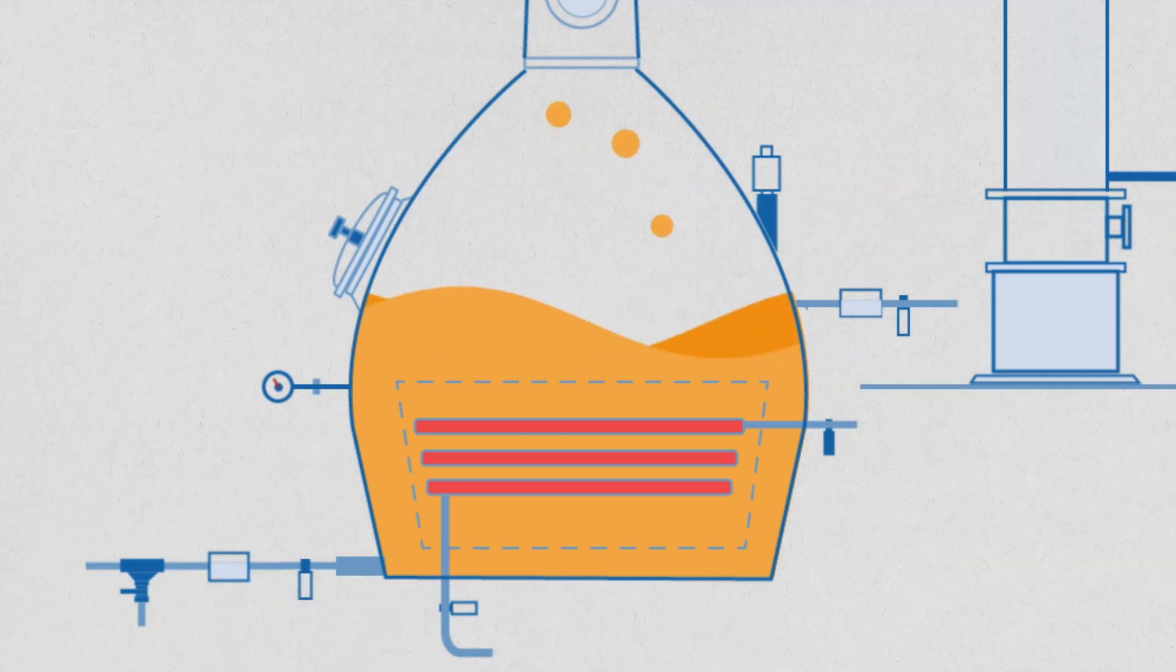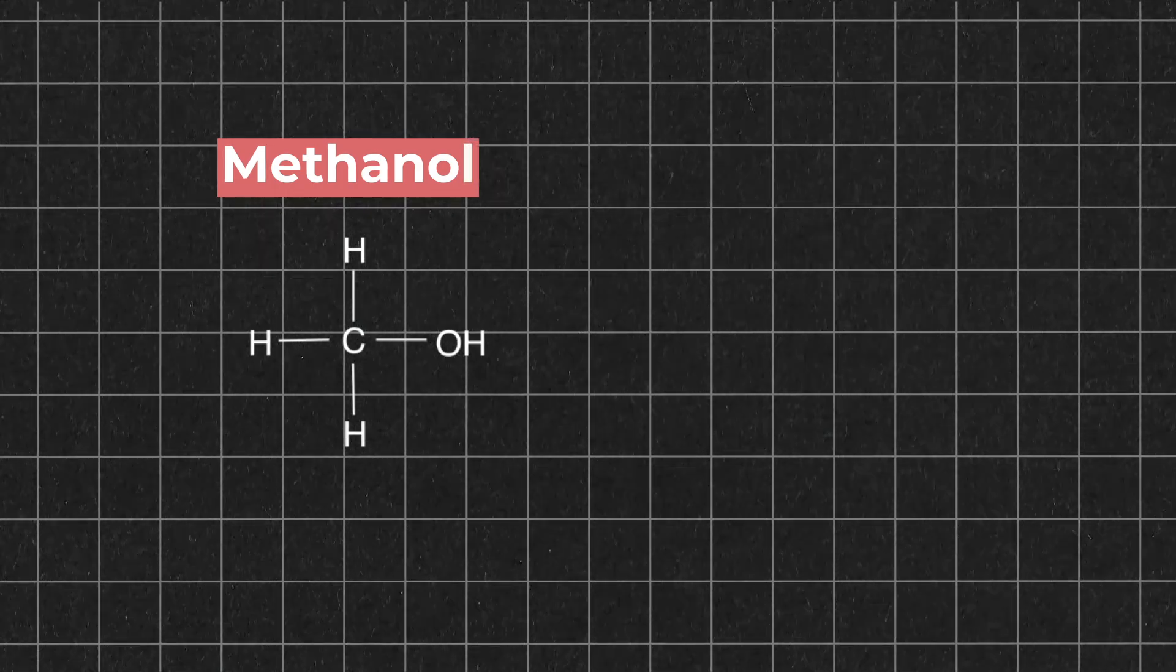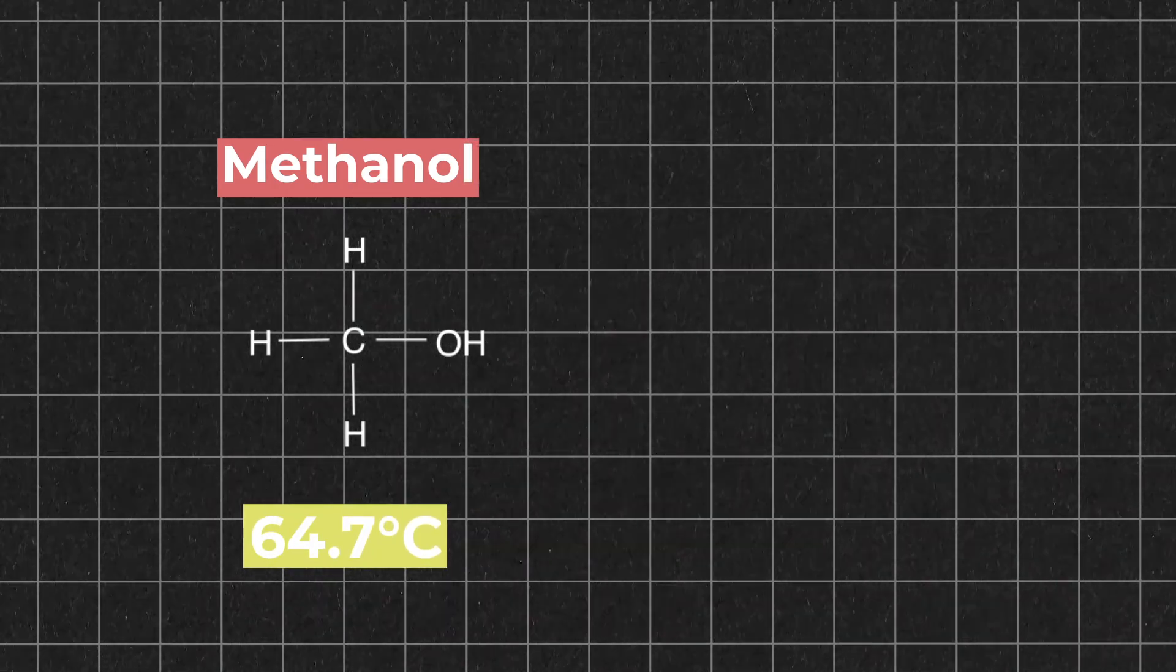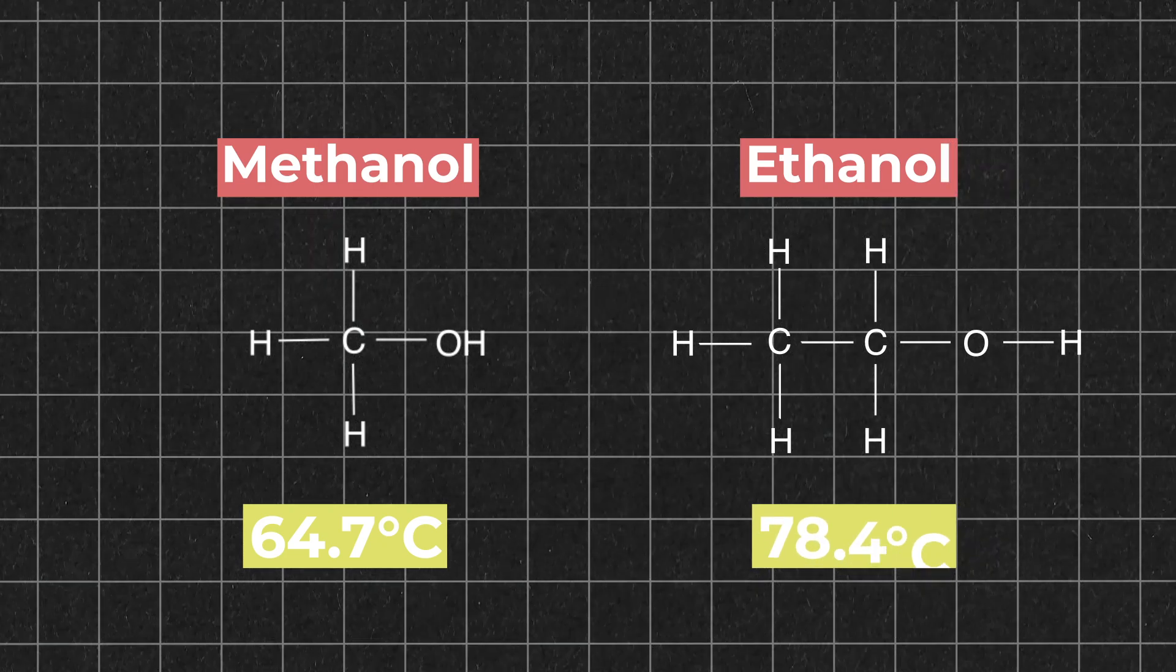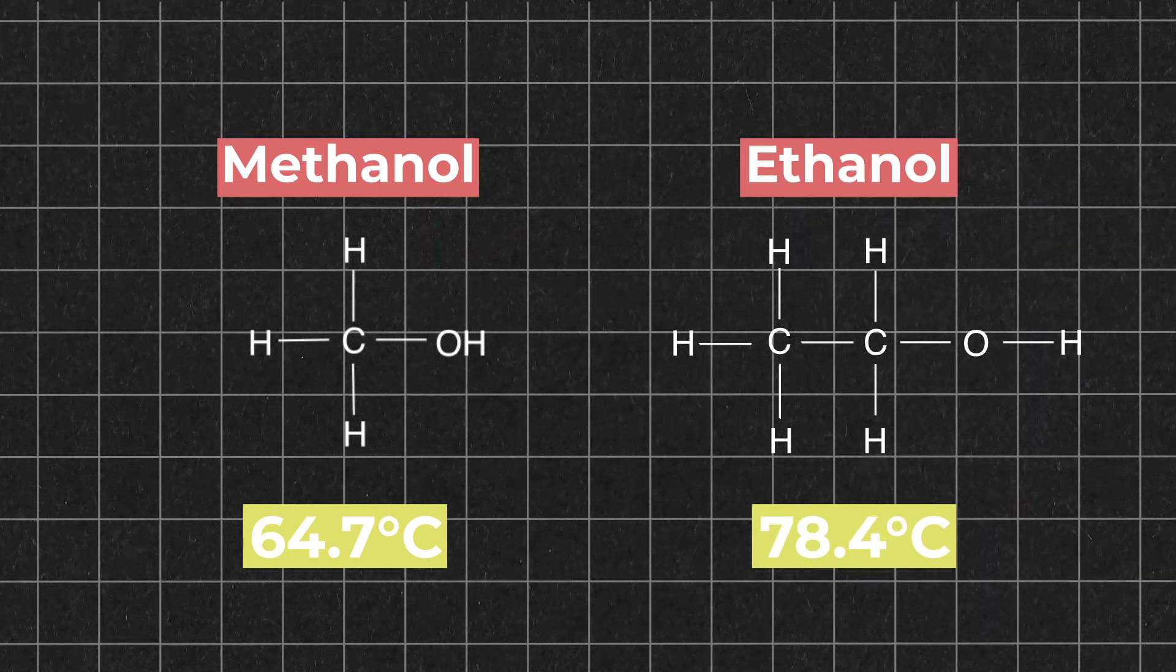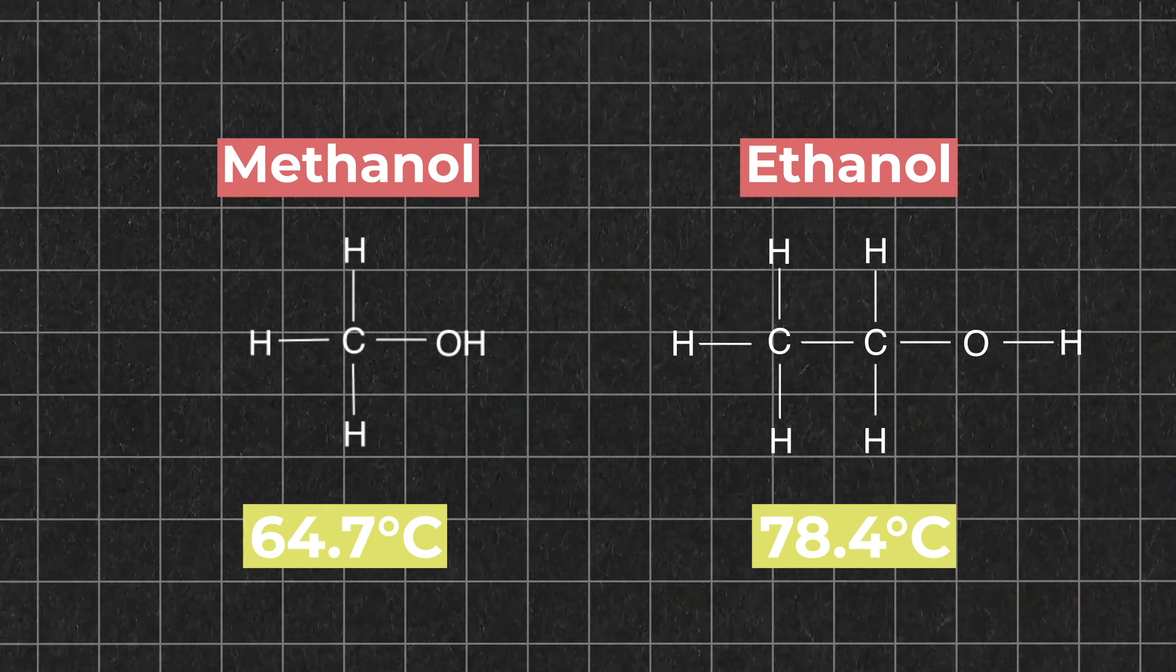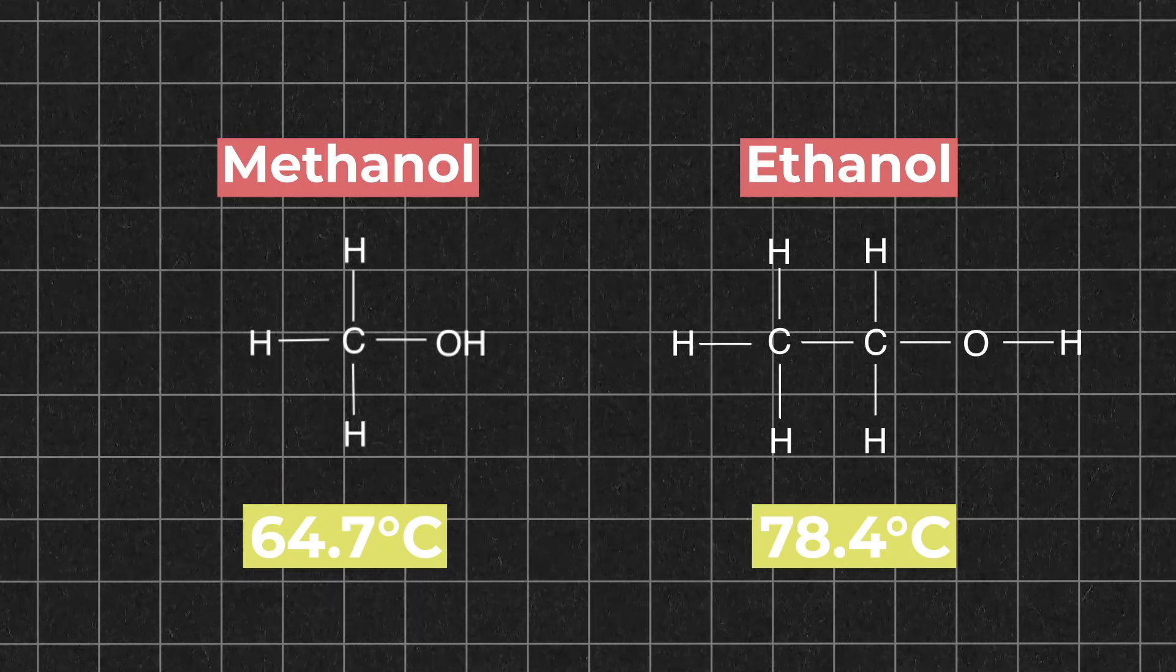What I mean by volatility is how readily a substance will change from a liquid form into a gas form. For instance, methanol has a boiling point of 64.7°C, ethanol has a boiling point of 78.4°C, and water has a boiling point of 100°C. So in this case, we can say that methanol is more volatile than ethanol since it will turn from a liquid to a gas at a lower temperature.